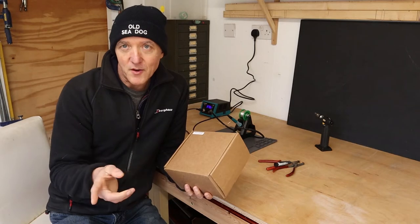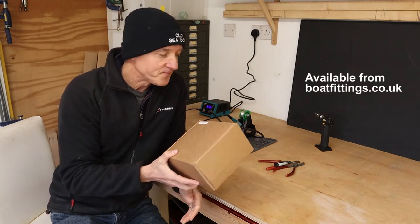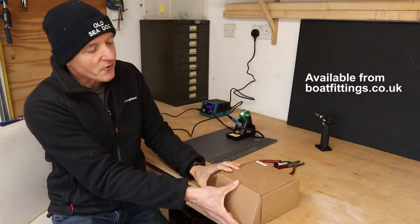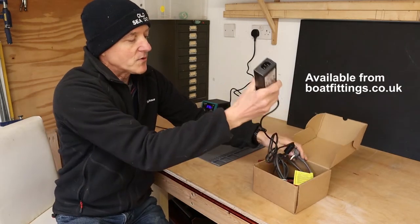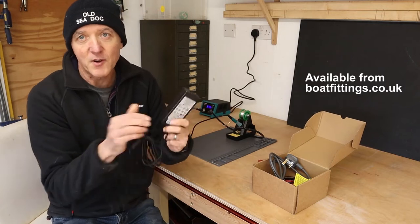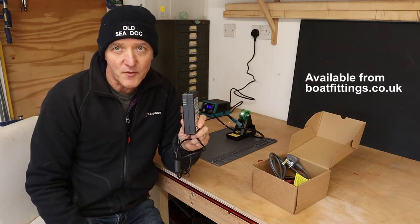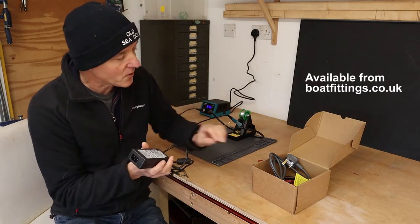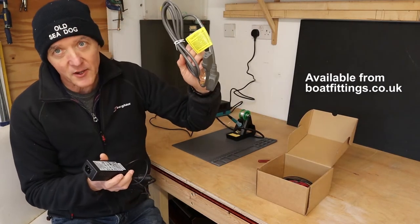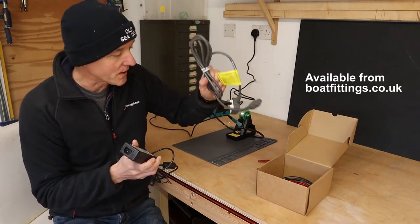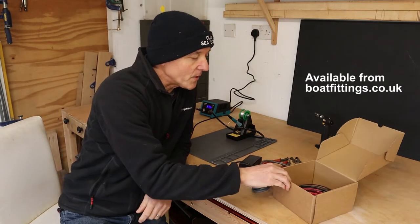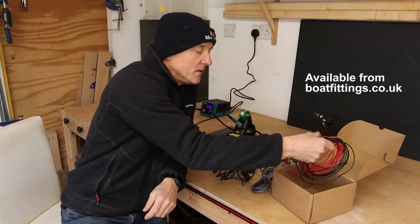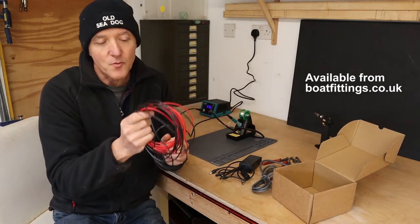In the kit we have got a 12-volt power supply—this one is a 5 amp version, we've also got a 10 amp version coming along. This is the mains lead, UK mains lead to go with it. The other thing we have is some extension wires—we've got four meters of the black and the red to extend the wires from the bilge pump.